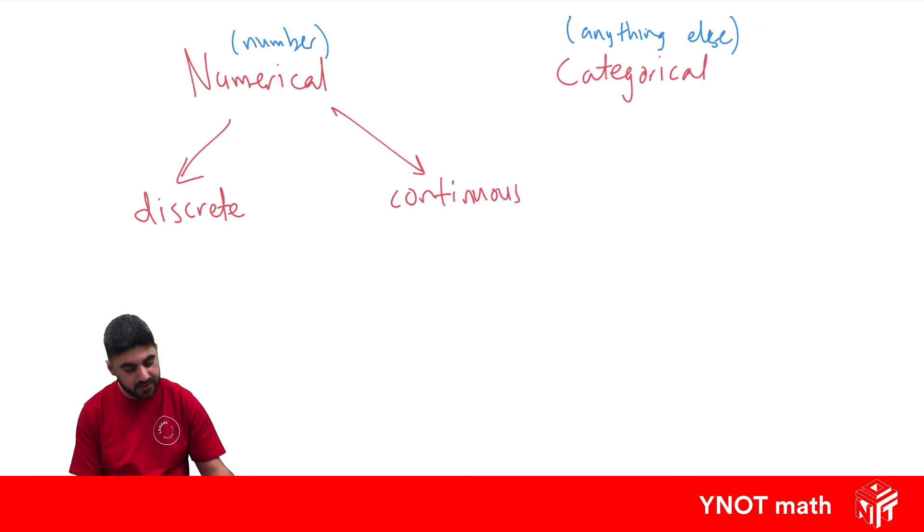Discrete has to be a whole number. Continuous is any number.